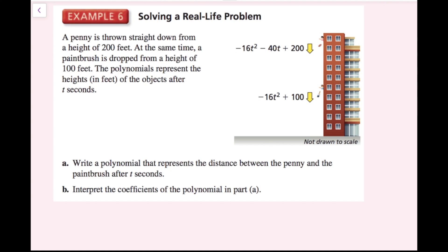For example 6, a penny is thrown straight down from 200 feet, and at the same time a paintbrush is dropped from 100 feet. Polynomials represent the heights in feet of each object after t seconds. Part A: write a polynomial representing the distance between the penny and the paintbrush after t seconds. To find the distance, we subtract the two height expressions.